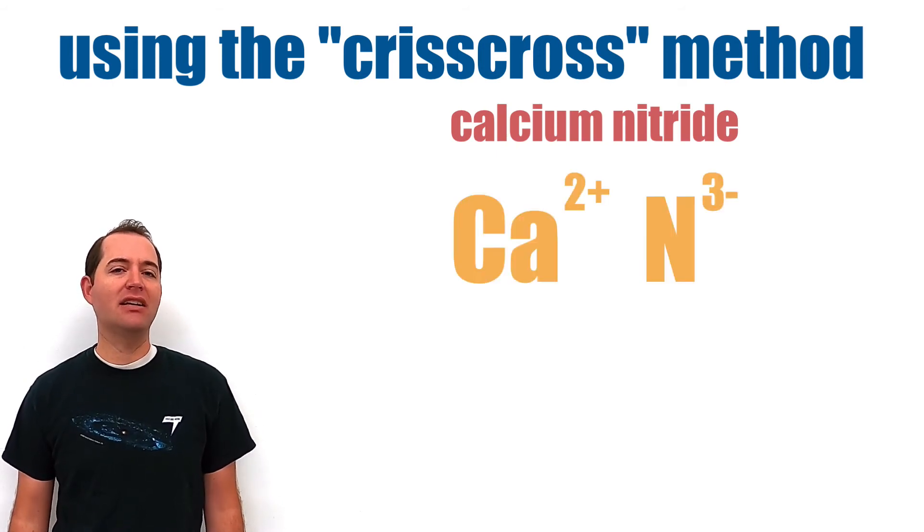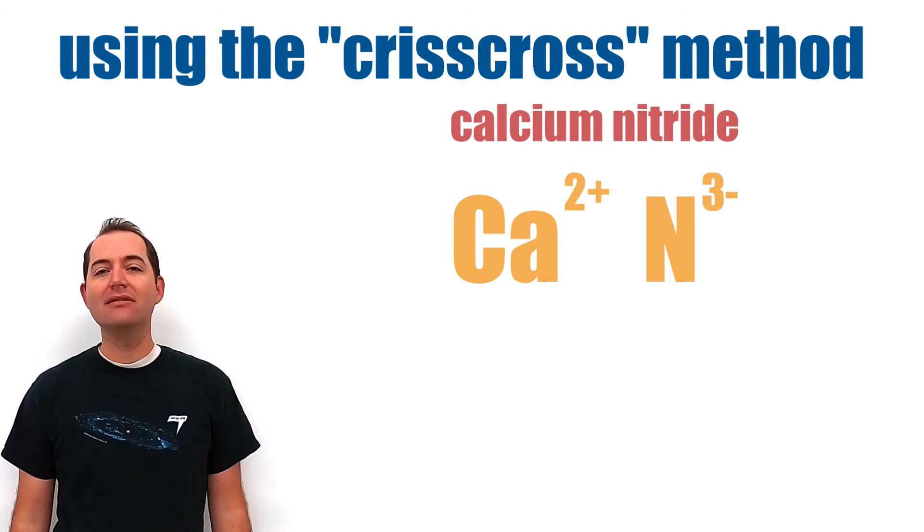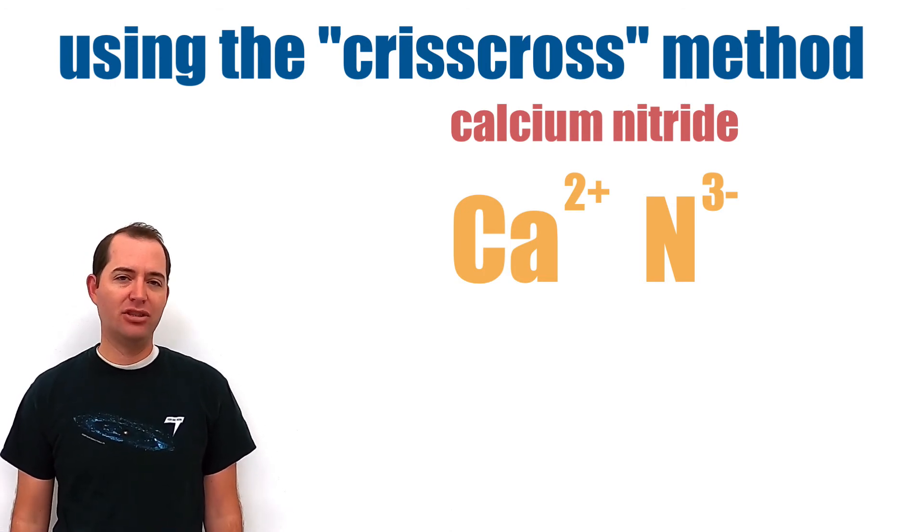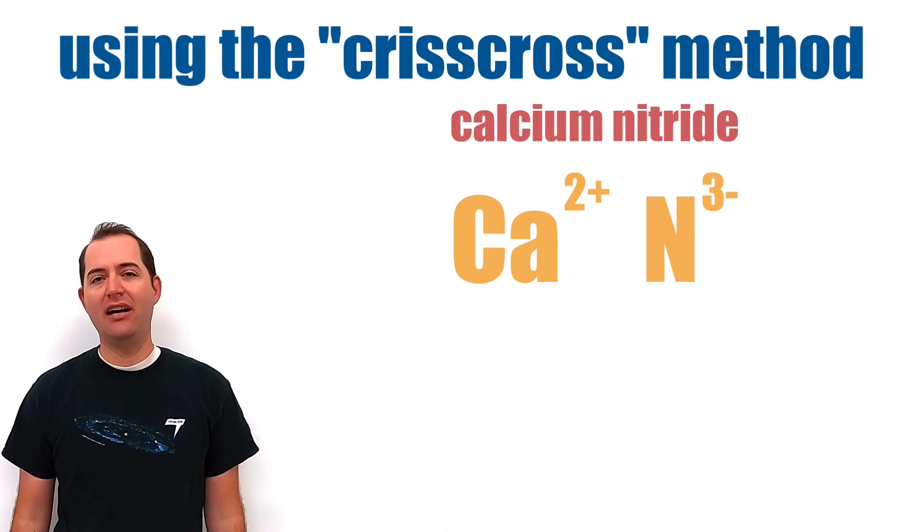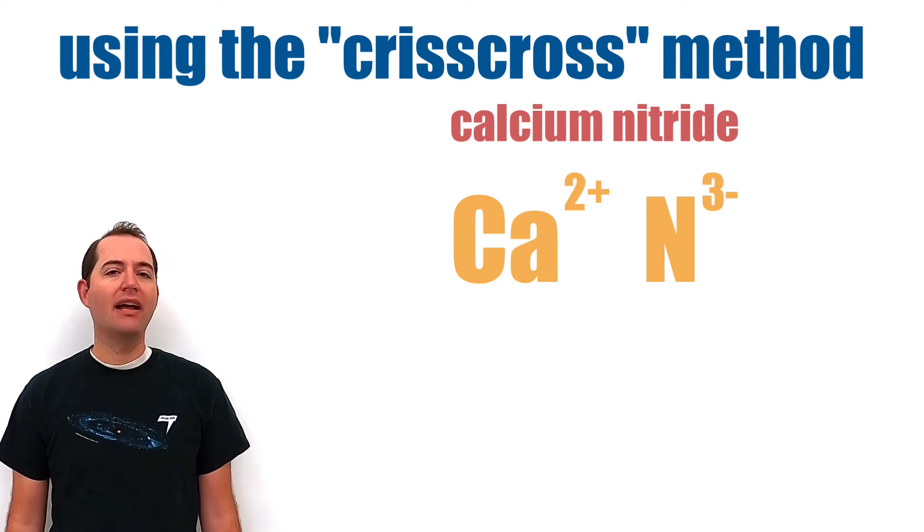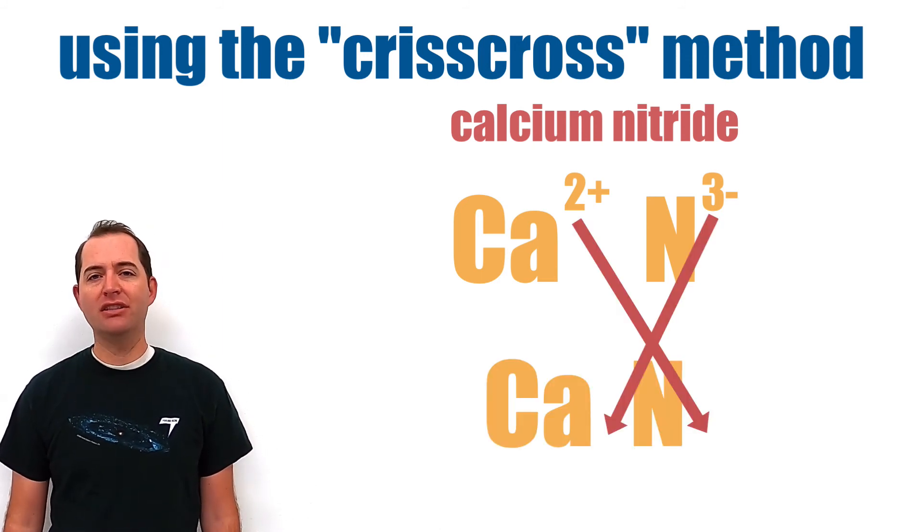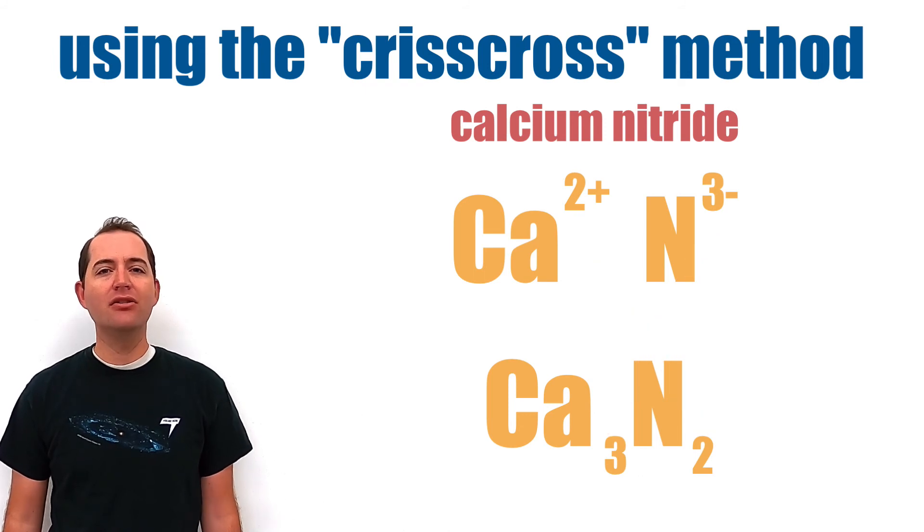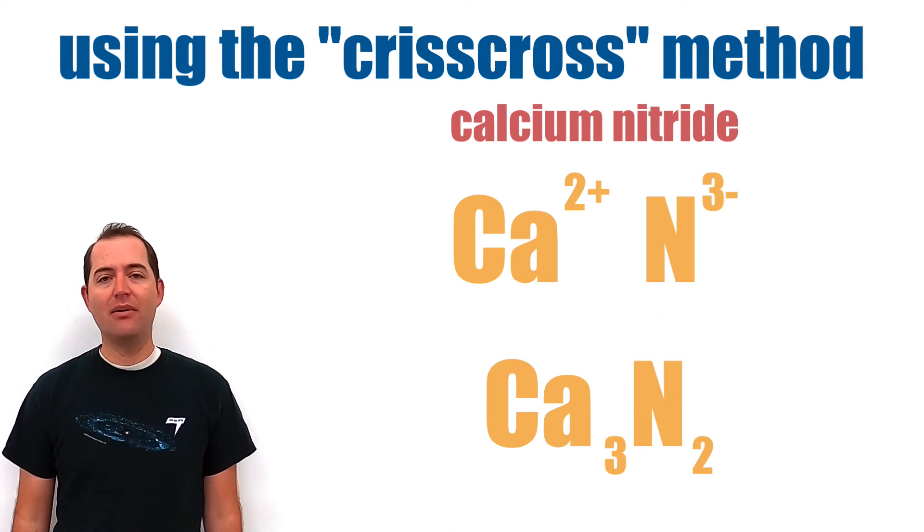we can begin by placing the two ions and their charges next to each other. The calcium ion has a positive 2 charge, and the nitride ion has a negative 3 charge. Remember that the positive ion should always be first. Next, we can crisscross the charges to determine how many of each ion are needed to form a neutral ionic compound. This process tells us that we need three calcium ions and two nitride ions to make a balanced ionic compound.